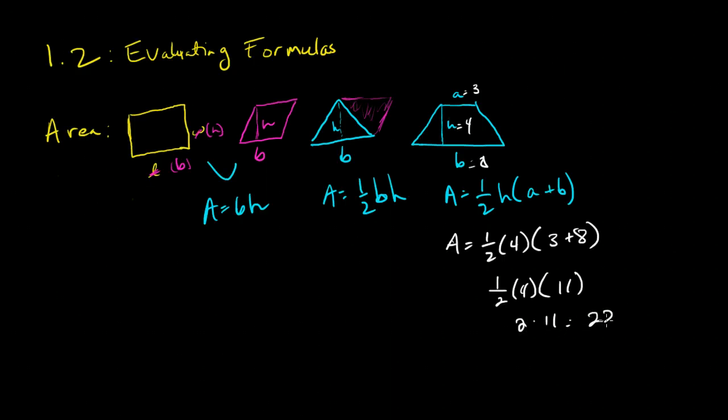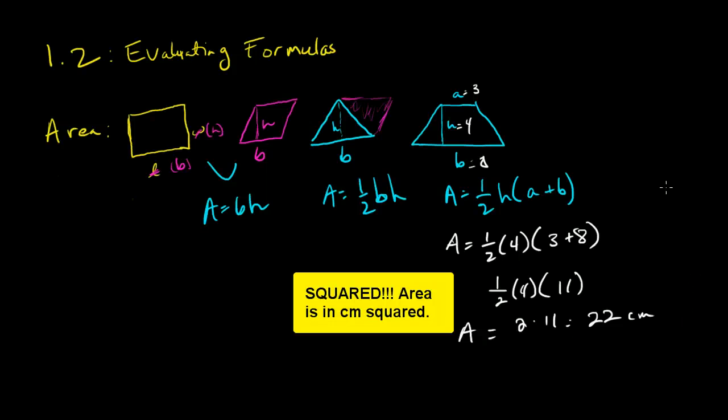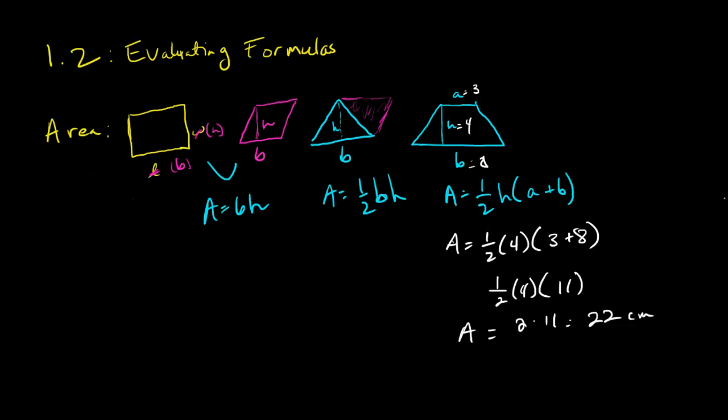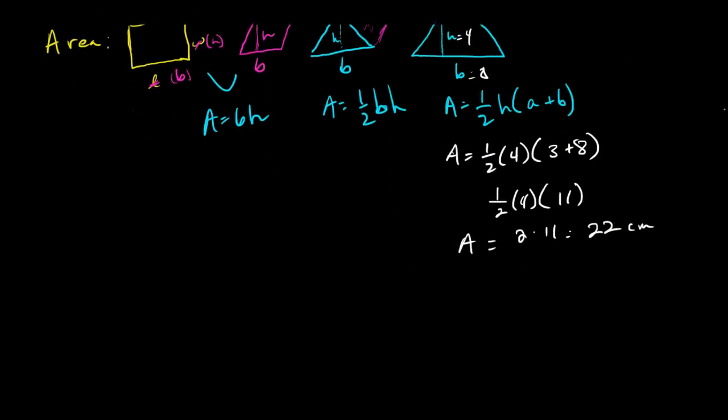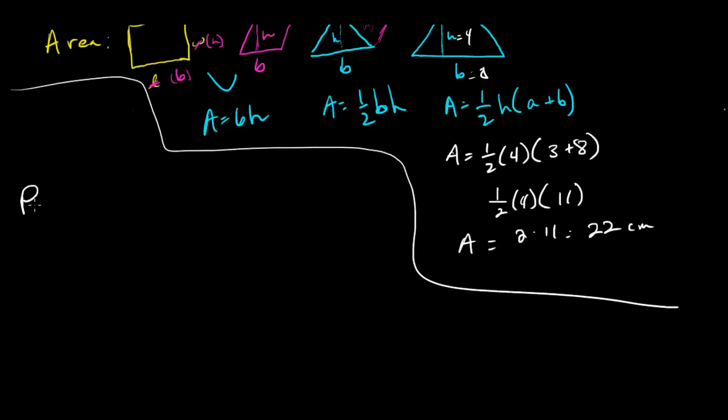So the area of this is 22, and let's say it's in centimeters just for the sake of argument. So that's using an area to evaluate formulas, but we use formulas for all kinds of things. We can use formulas for areas, we can use formulas for perimeter.